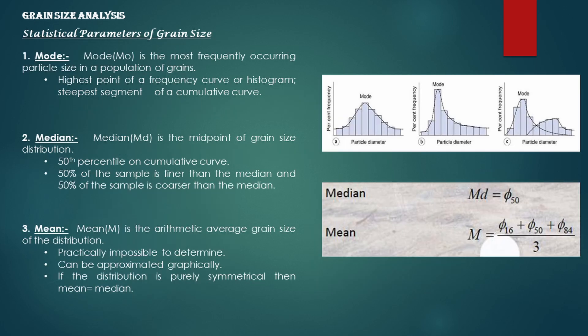Next, let's discuss statistical parameters of grain size. Mode is the most frequently occurring particle size in a population of grains — the highest point of a frequency curve or histogram, and the steepest segment of a cumulative curve. Median is the midpoint of the grain size distribution. Mean is the arithmetic average grain size of the distribution; it is practically impossible to determine exactly but can be approximated graphically. If the distribution is perfectly symmetrical, then the mean equals the median.